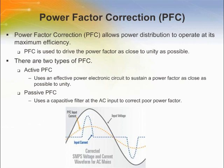There are two types of PFC: active PFC and passive PFC. An active PFC uses an effective power electronic circuit that controls the amount of power drawn by a load in order to sustain a power factor as close as possible to unity. A passive PFC uses a capacitive filter at the AC input to correct poor power factor.